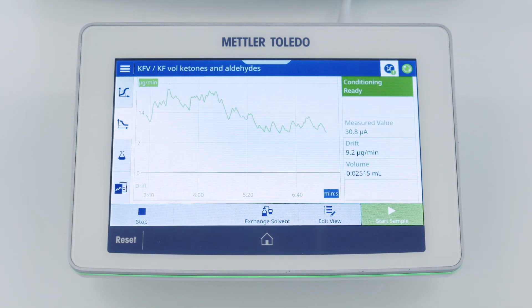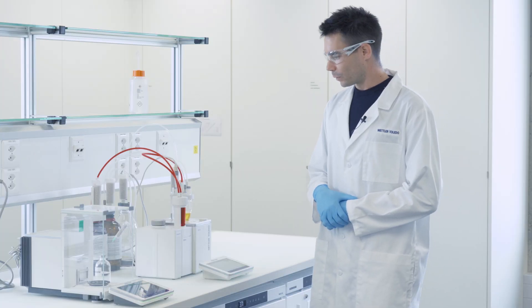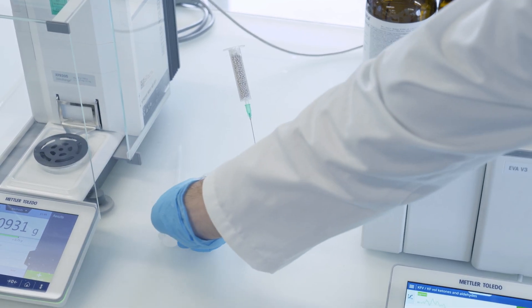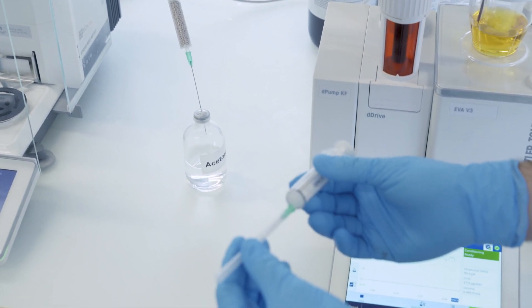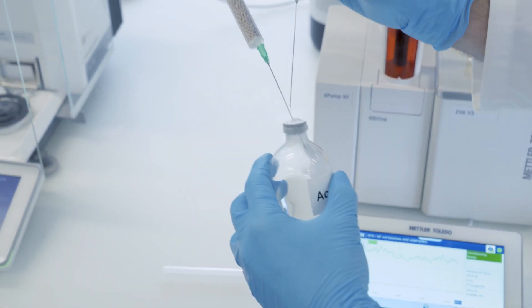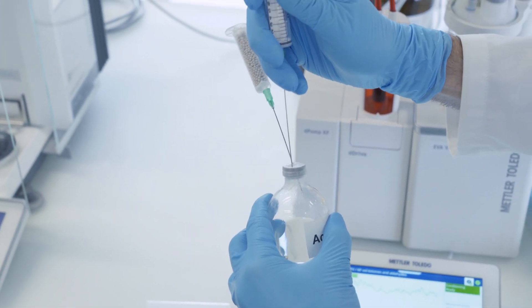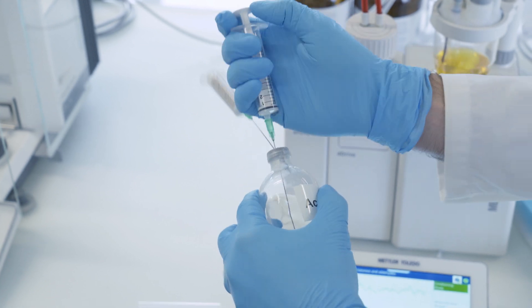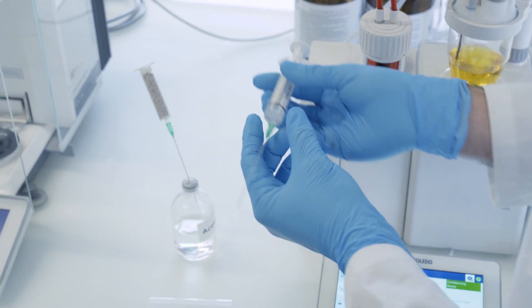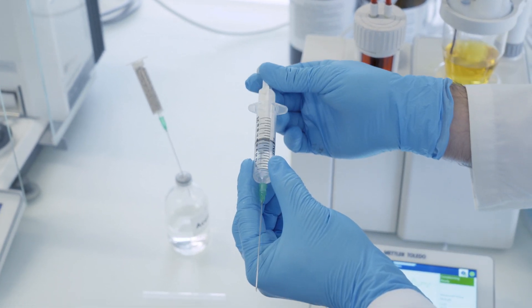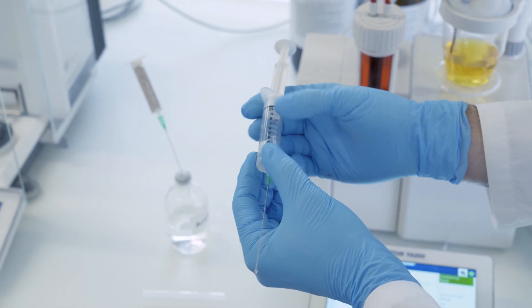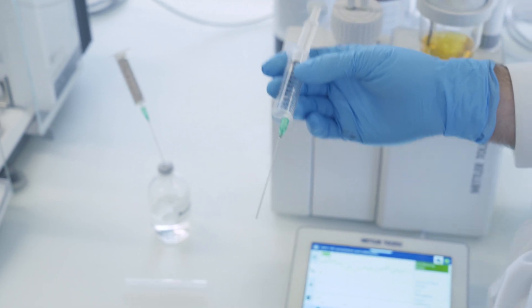We will now prepare the sample. We will determine the sample by manual injection via a syringe. To do this I take a little bit of the sample and I wash my syringe with the sample. The sample that I used for washing can be discarded.